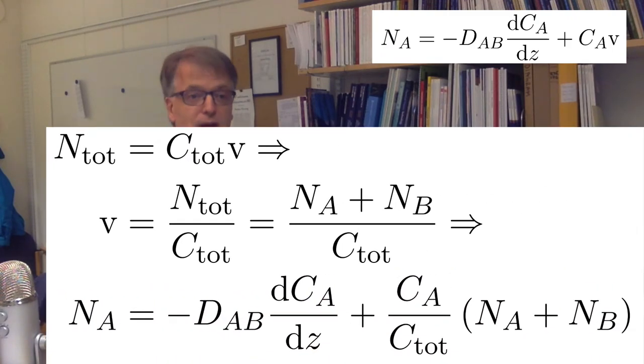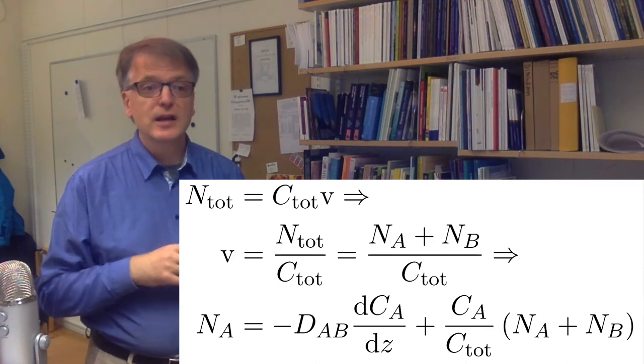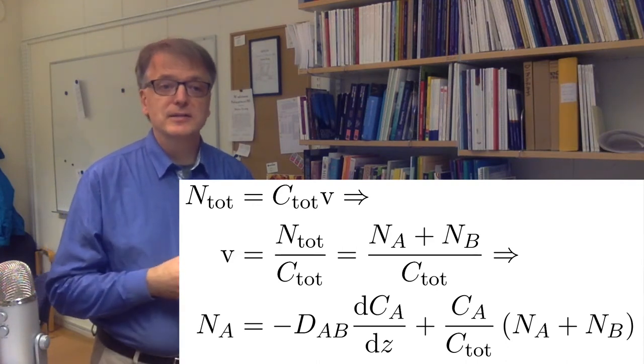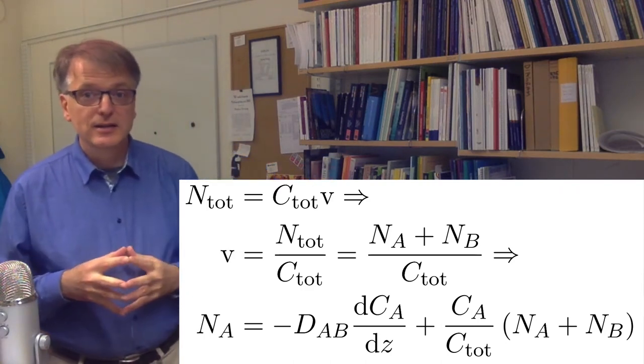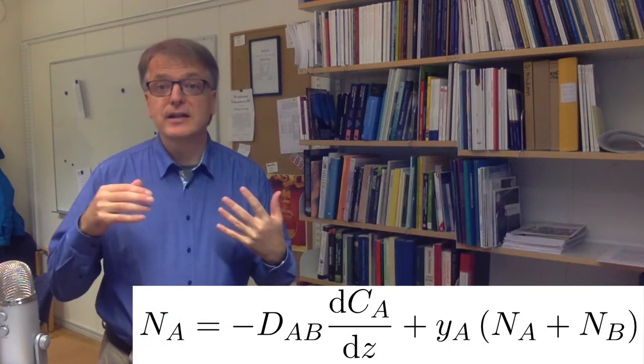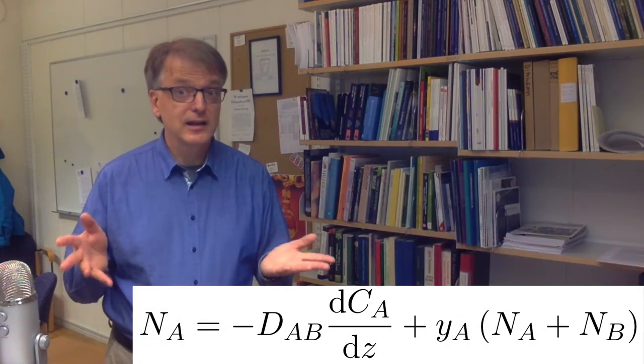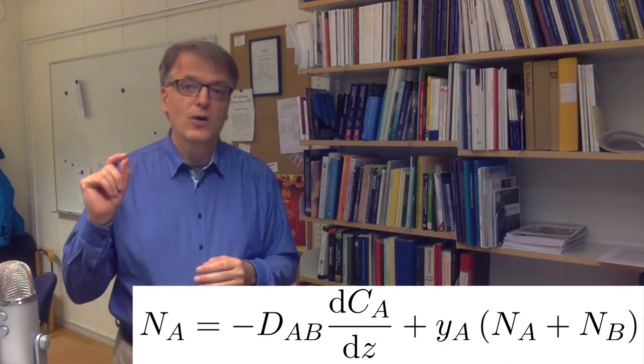And then we can rearrange this and say, OK, then n-A equals the diffusive part minus diffusivity times the concentration gradient plus c-A divided by c-tot times n-A plus n-B. And the nice thing with this one is with gases c-A divided by c-tot, that's the same thing as, at least if you have ideal gases, as the molar fraction of that component.